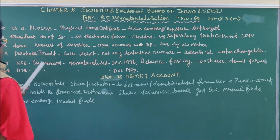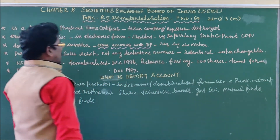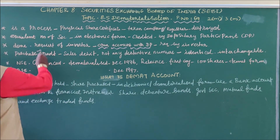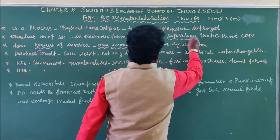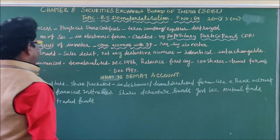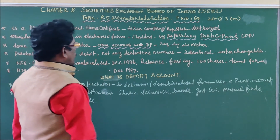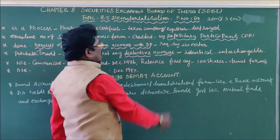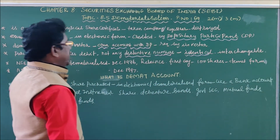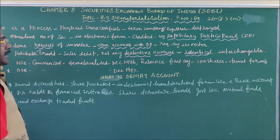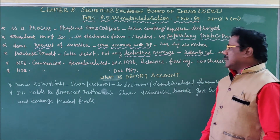In summary, dematerialization involves understanding what dematerialization means and how to open an account with the depository participant. Purchases of securities are credited and sales are debited in the demat account, but shares do not have distinctive numbers — all shares are identical and interchangeable. NSE commenced its business in December 1996 and Bombay Stock Exchange in December 1997.